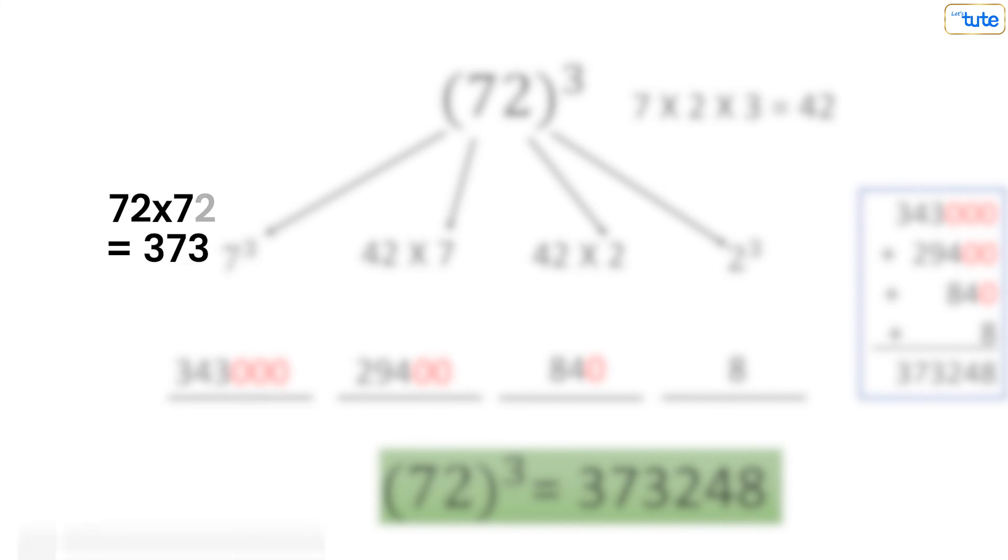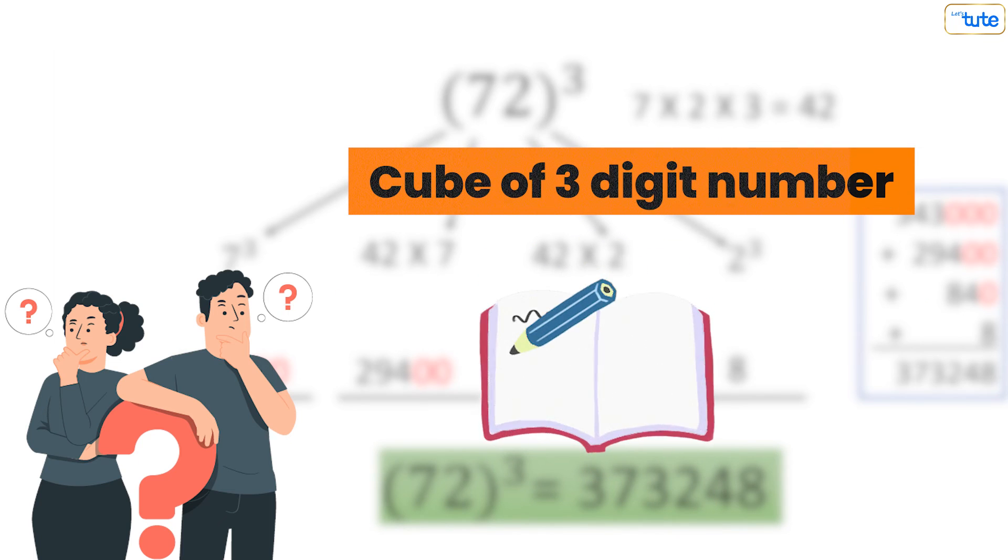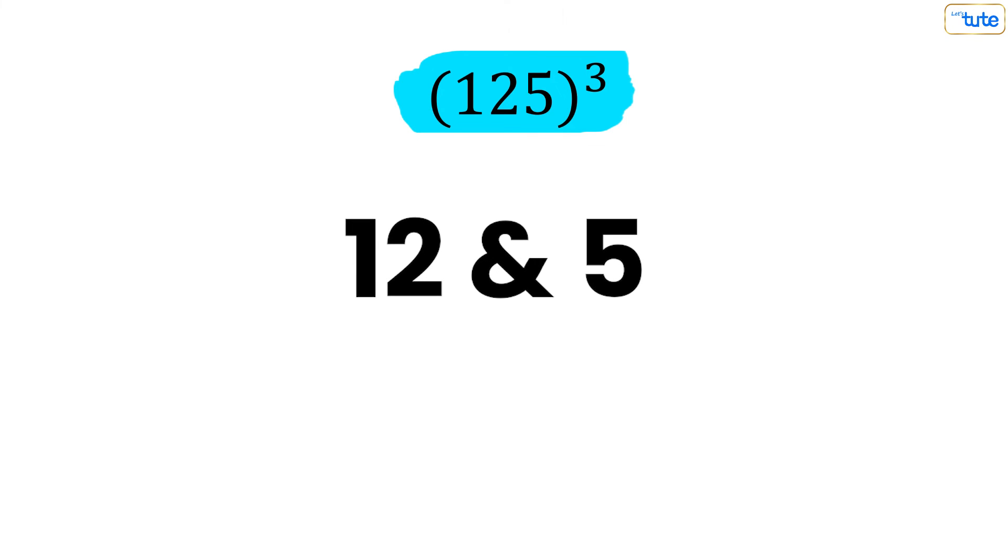So you must be thinking, what if we want to find the cube of a three-digit number? For a three-digit number, we don't do anything different. Let's assume we're trying to find the cube of 125. To find the cube of 125, we first separate the number as 12 and 5, and use the same trick we just learned.